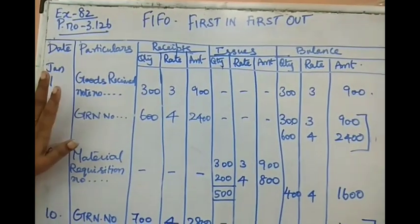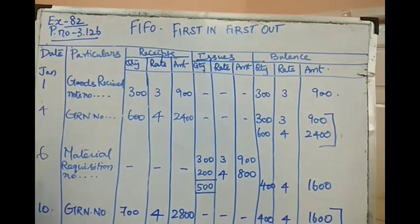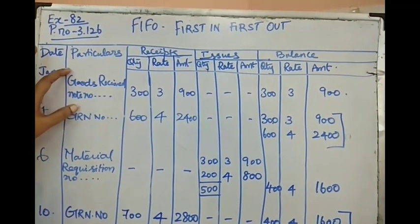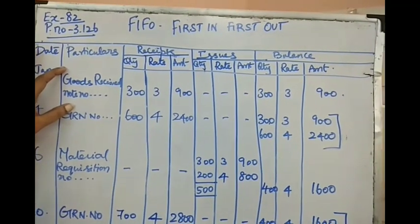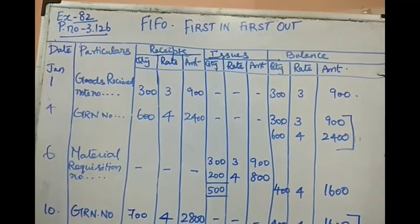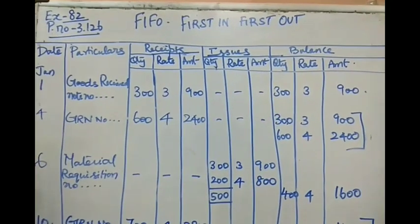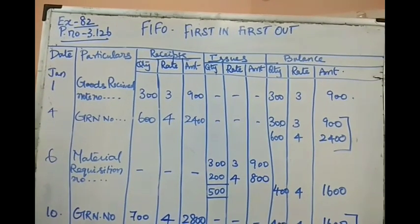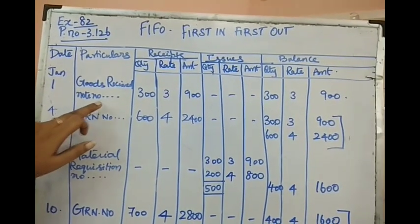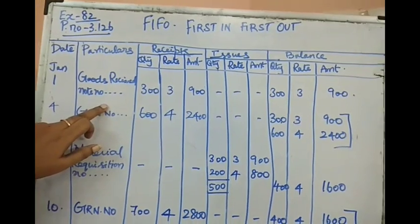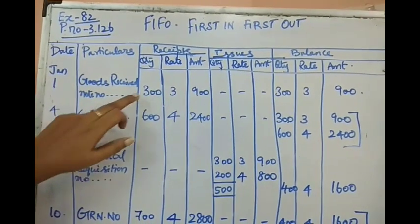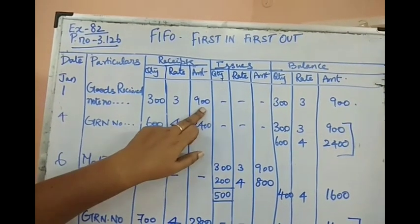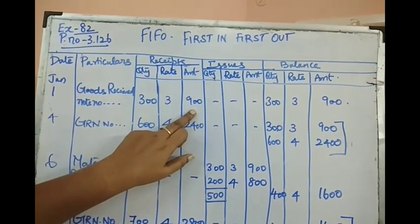This problem doesn't carry an opening balance, so we start with the transactions. On January 1st, there is a Goods Received Note. The material received from our supplier is recorded in the stores ledger: 300 units at ₹3 per unit, amounting to ₹900, and that is entered in the balance.